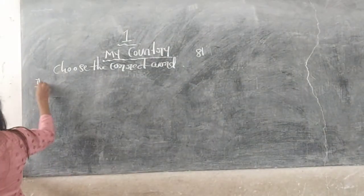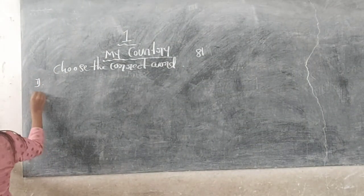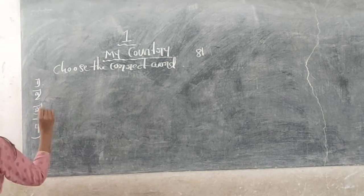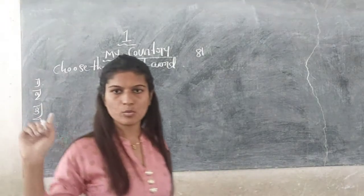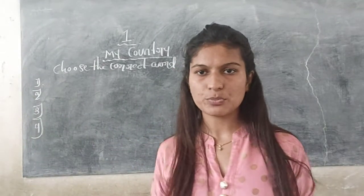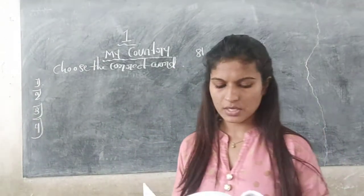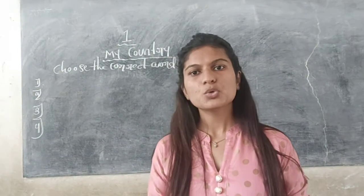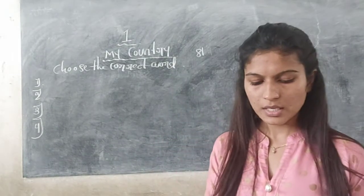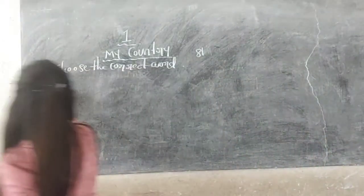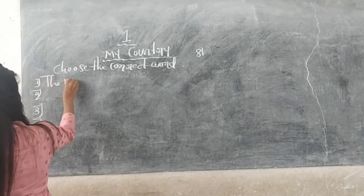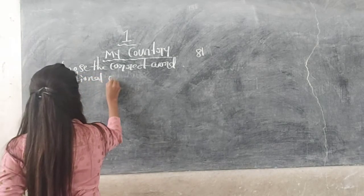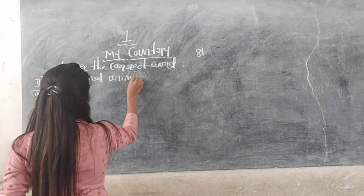So the first question is: the national animal of India is dash. I will put the answers on the board — just copy the answers in your textbook. The national animal of India — which one is that?